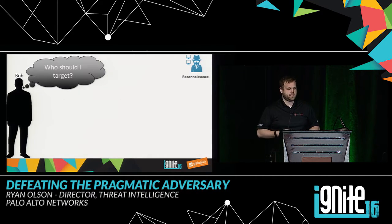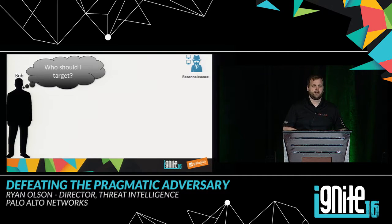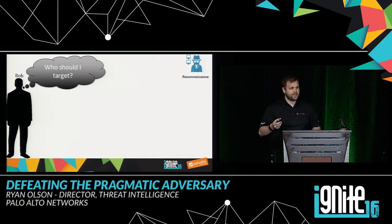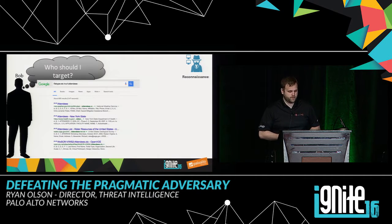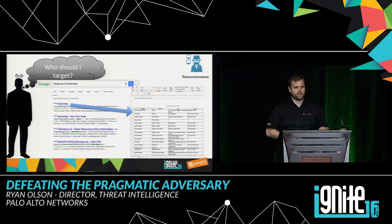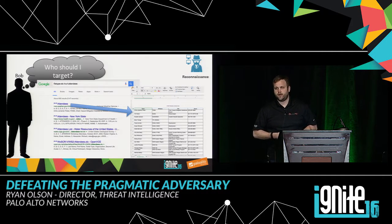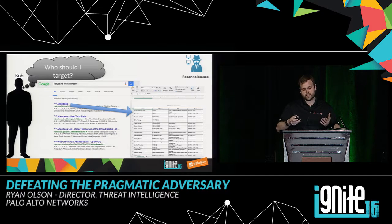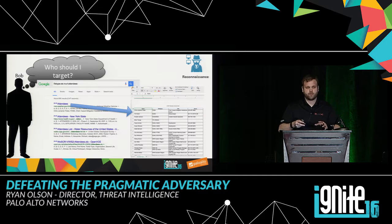Let's jump in with reconnaissance first. Bob is thinking: who should I target? His boss has told him to go acquire certain information. One really simple way a pragmatic adversary might do this is through Google. If you Google for filetype XLS and inURL attendees, you get a lot of amazing information — spreadsheets filled with people's names, titles, phone numbers, and email addresses from conferences, including government conferences — all potential fodder for future spear phishing attacks. Really easy for a pragmatic adversary to identify who they want to attack without any sophisticated skills.